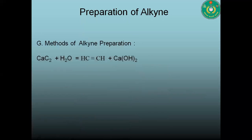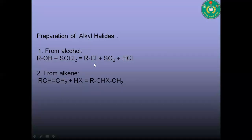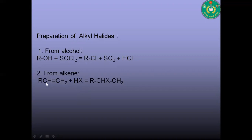Preparation of alkyne (general formula CₙH₂ₙ₋₂): calcium carbide is used — when water is added dropwise to calcium carbide, the product is acetylene (alkyne). Alkyl halides can be prepared from alcohol using thionyl chloride to form alkyl chloride. Alkyl halide can also be prepared from alkene reacting with hydrogen halide, following Markovnikov's rule: the positive end of the reagent goes to the carbon atom containing the higher number of hydrogen atoms, and the negative end goes to the carbon with fewer hydrogen atoms.